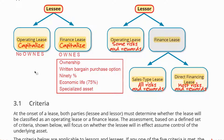To summarize: for the lessee, it's either an operating or a finance lease. If any of the OWNS has been met, it's definitely a finance lease; if none of the OWNS are there, then it's an operating lease. For the lessor, it's either an operating lease, a sales-type lease, or a direct financing lease. It would be a sales-type lease if any of the OWNS is met. It would be a direct financing lease if no OWNS but both P and C are met. If no OWNS and no P plus C, then it's an operating lease for the lessor.